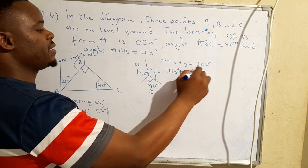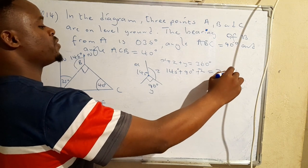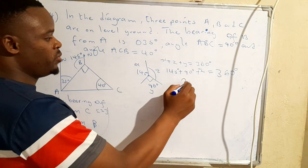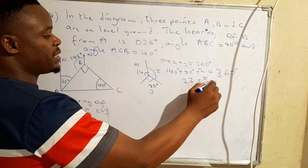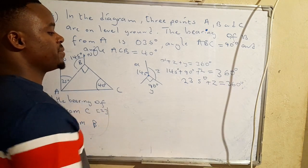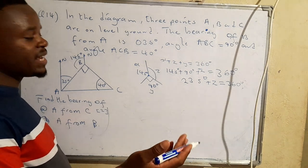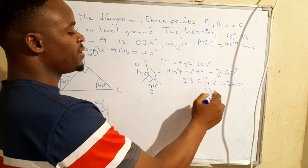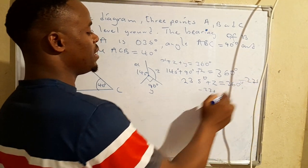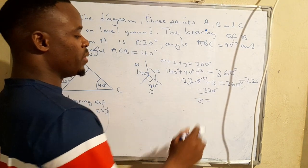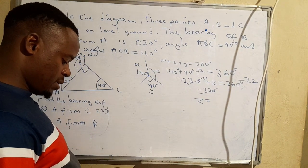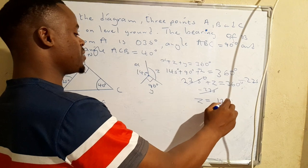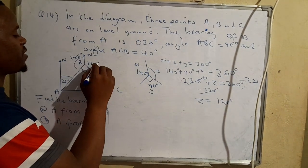145° plus 90° gives us 235°, plus z equals 360°. We have a linear equation in one unknown, so we bring the 235° to the other side: z equals 360° minus 235°, which is 125°. So this angle here is 125°.